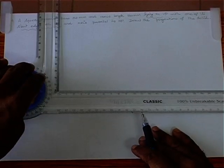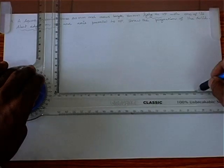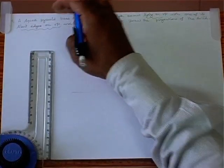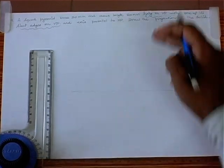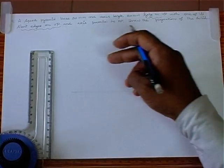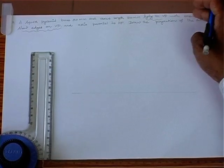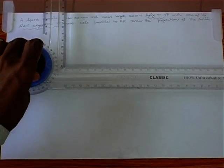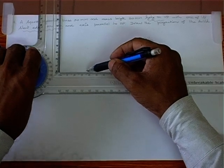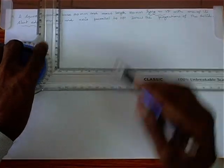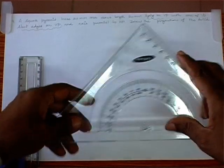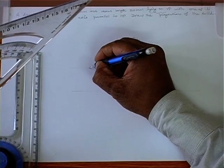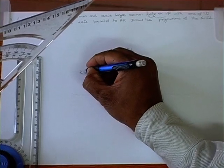Let's draw reference line XY. Given the square pyramid is lying on VP, we should draw the front view first. At the same time, one of its slant edges is on VP, so we should draw the square in such a way that it gives a corner position. Then only we can get the square pyramid in slant edge form. We start with a point A dash.